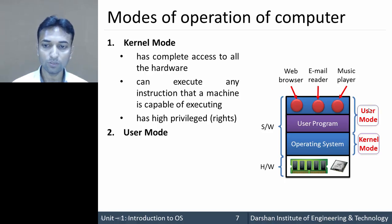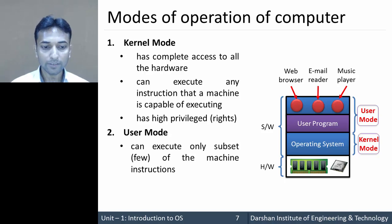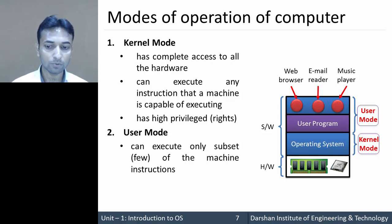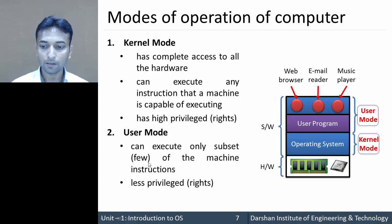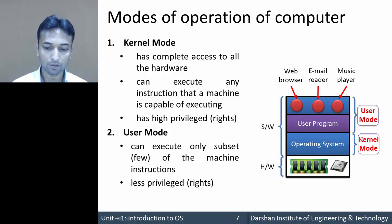The second mode is user mode. The program that runs in user mode can execute only a few instructions — application programs or user programs cannot execute all instructions and can access only a limited set of instructions. These programs that run in user mode have less privilege than kernel mode. So these are the two different modes of operation of a computer.